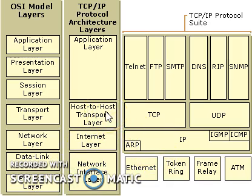The demerits of the TCP/IP model are: the transport layer does not guarantee delivery of packets, the model cannot be used in any other application, replacing protocols is not easy, and it has not clearly separated its services, interfaces, and protocols as was done in the OSI reference model.